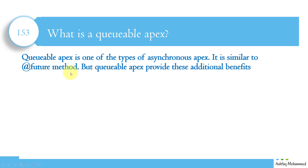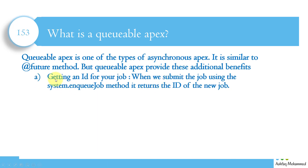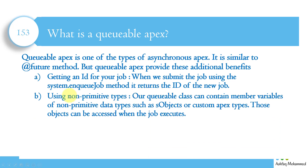Queueable Apex provides additional benefits. The first benefit is getting an ID of your job. With Future methods you will not be able to track it — you don't get the ID — but with Queueable you can get the ID when we submit the job using the System.enqueueJob() method, which returns the ID of the new job.